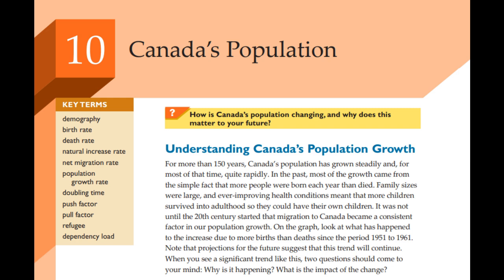It's really about connecting the dots. Take housing — we know more people are moving to cities and those cities need to be affordable and livable, so that means advocating for different housing policies and approaches to urban planning. Or think about health care: with an aging population, we need not just more health care workers, but different kinds of care — home care, long-term care. Maybe profit here isn't just about money. Maybe it's about creating a society where everyone can thrive, regardless of age or background — profit with a purpose.